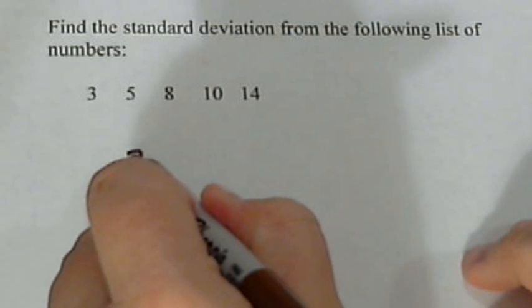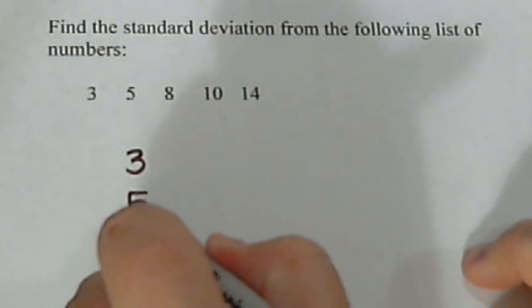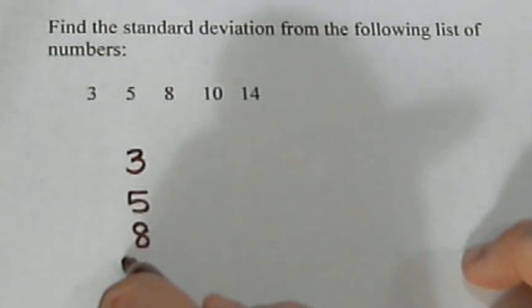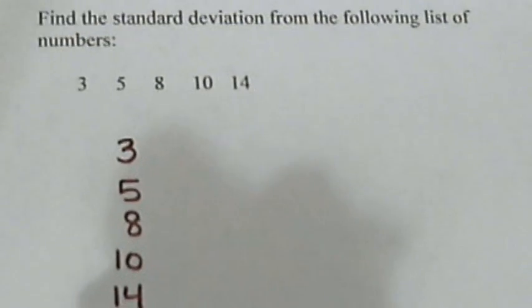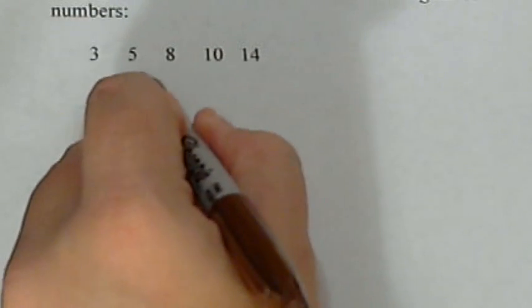Let's rewrite it in column form. I like writing it in column form. So, 3, 5, 8, 10, 14. These are our measurements, so we'll call that column X.